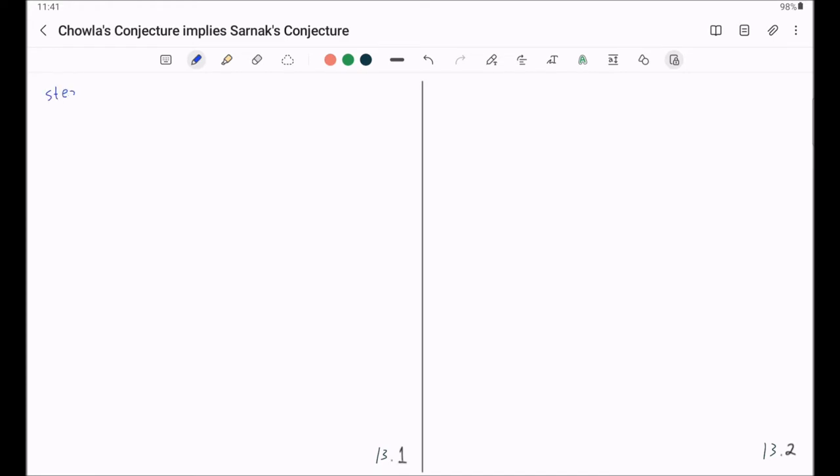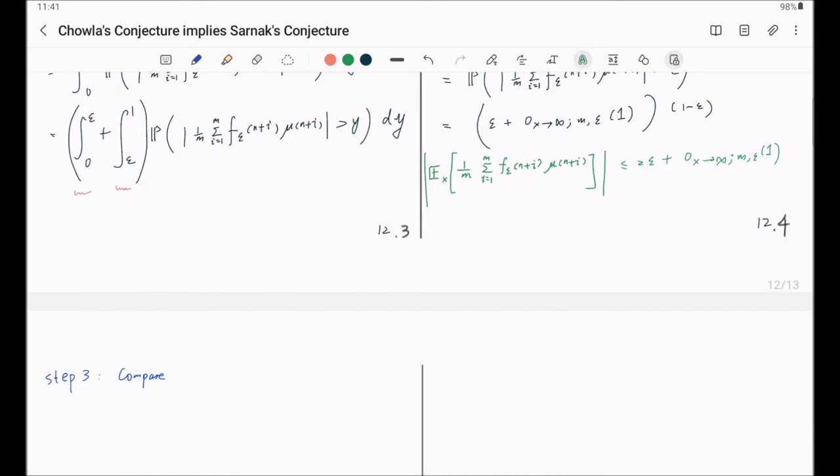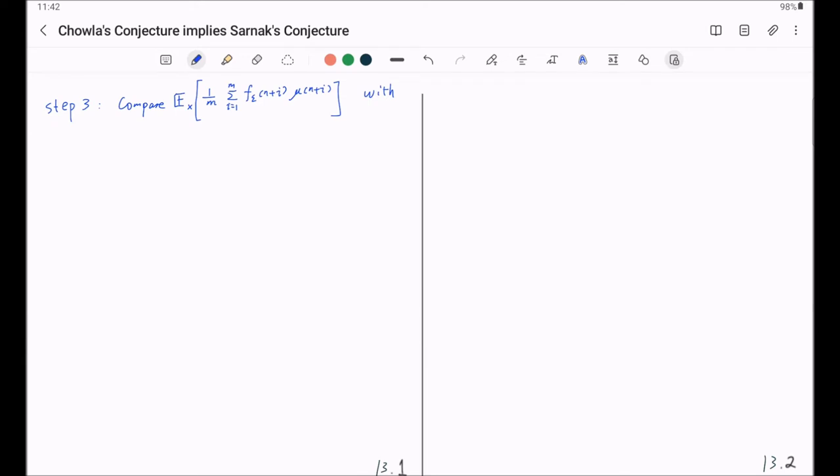Now we move on to our step three, which is our last step. In this step, we're going to compare this expectation with the average 1 over x times. And after that, we compare this with the original f without epsilon.